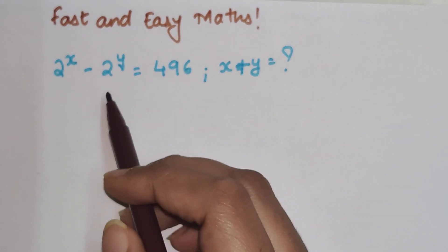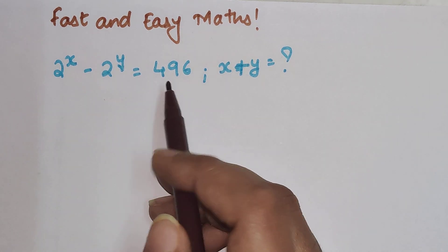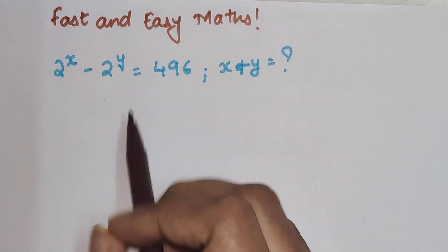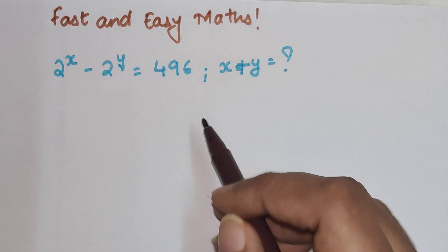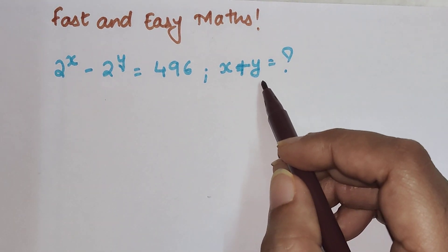So students, today we are going to solve a question where the given details are 2 raised to x minus 2 raised to y equals 496, and we need to find the value of x plus y.